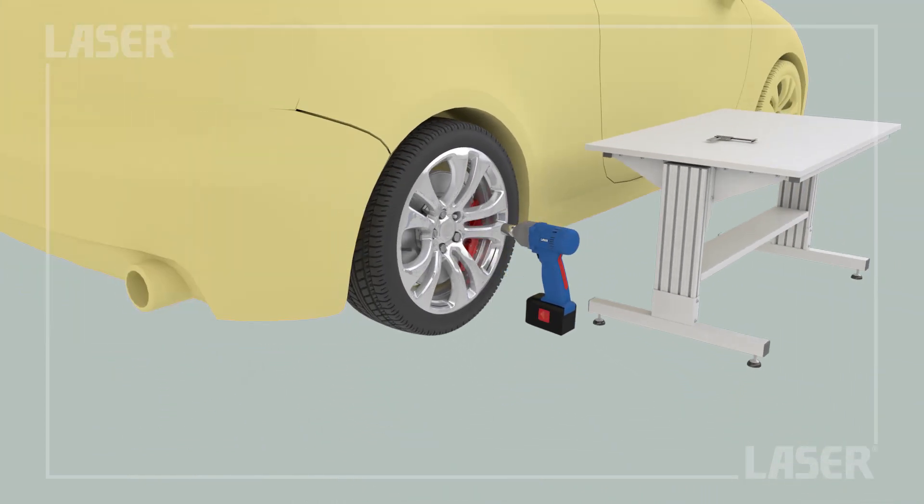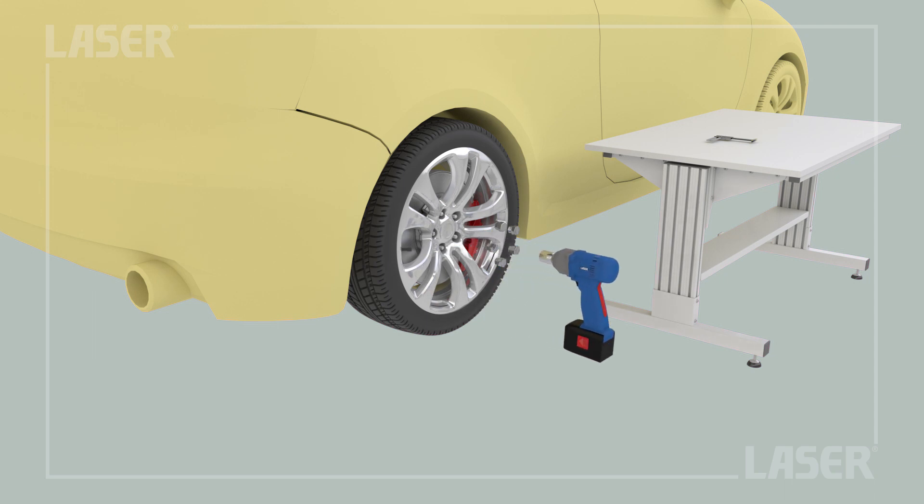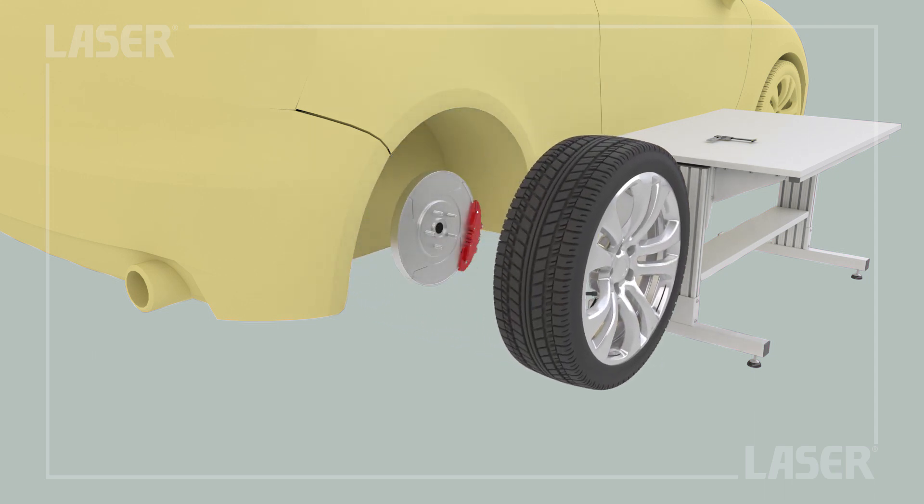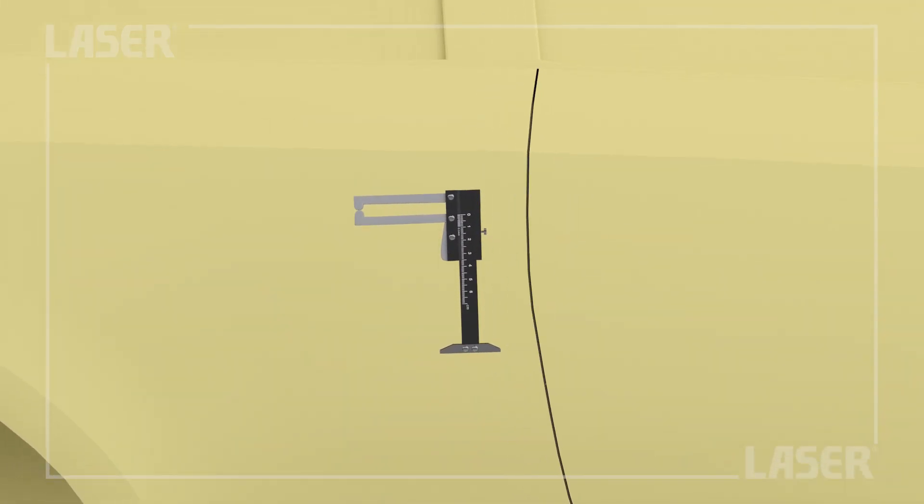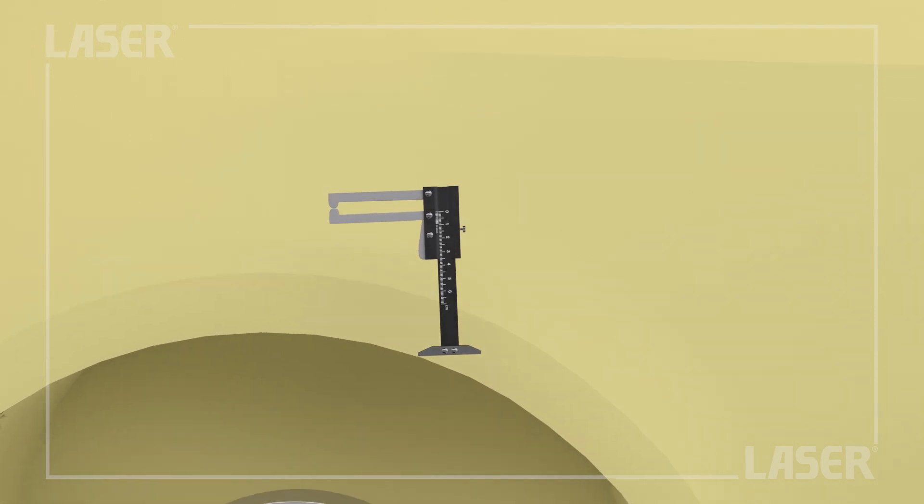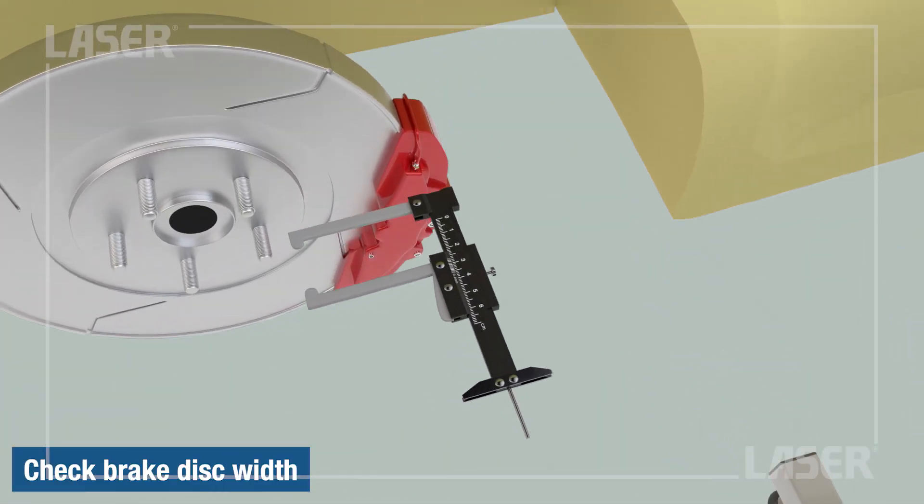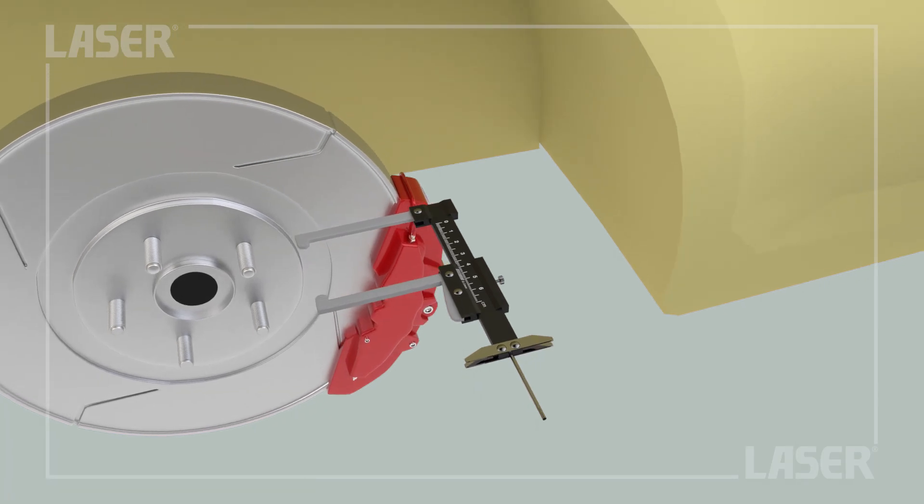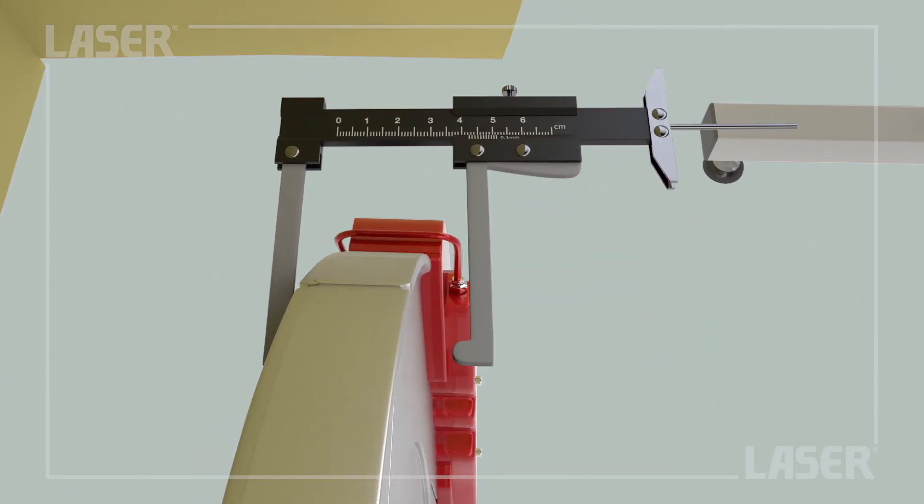Now let's remove the road wheel to get access to the brake disc. The tool is designed to take into account the ridge that forms on the outer edge of the disc. Position the tool onto the disc.